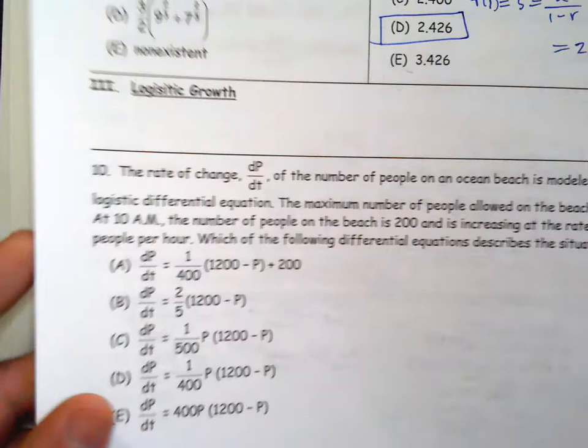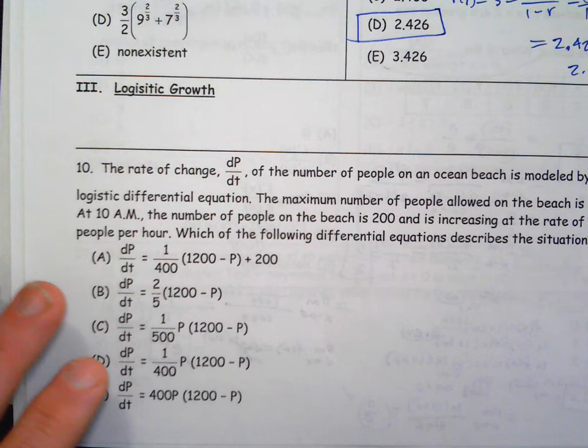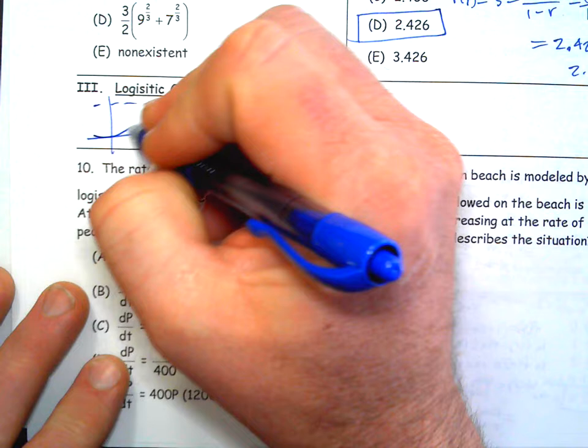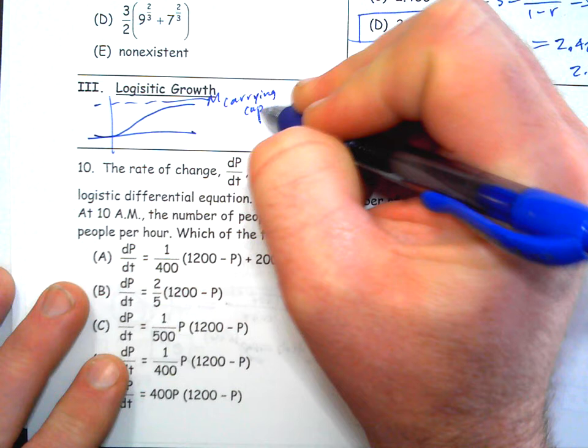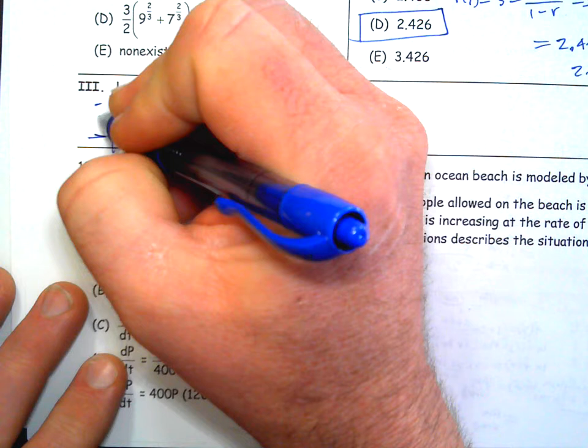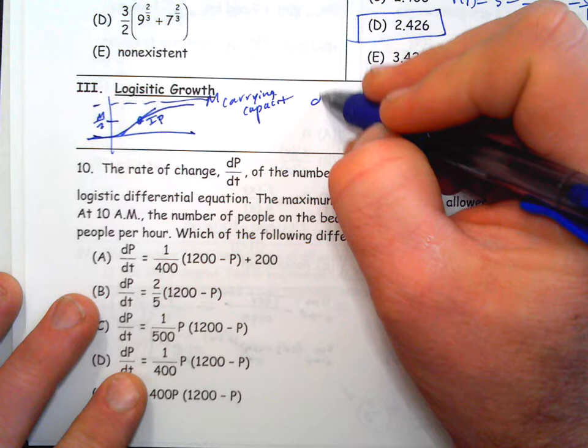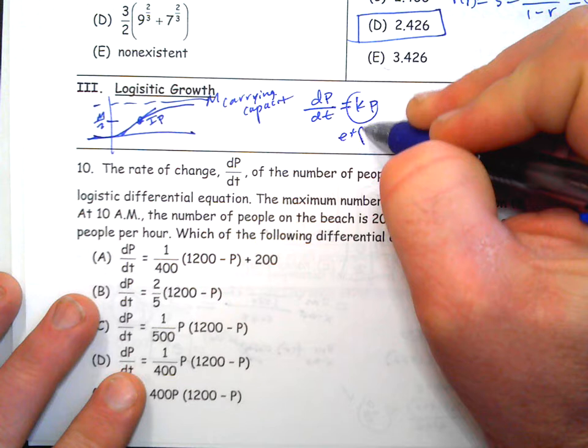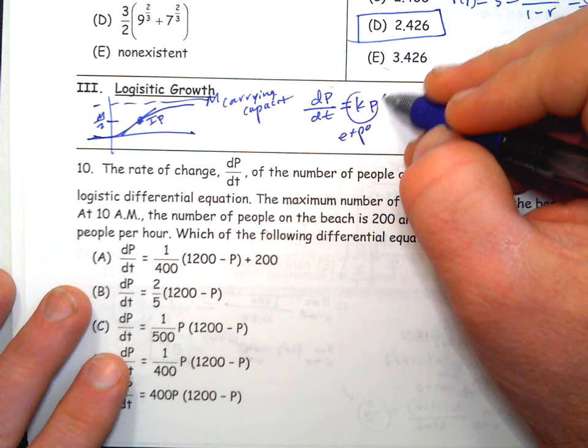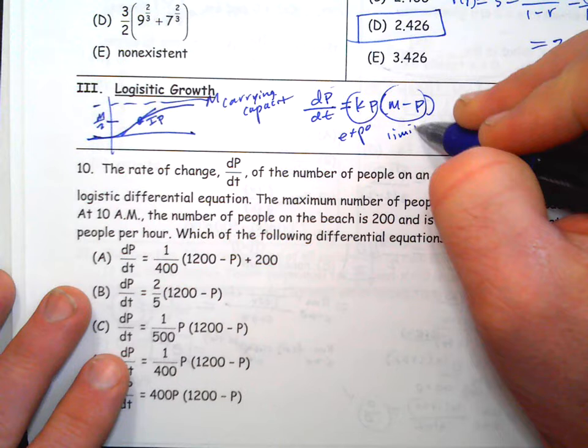Logistic growth is a more realistic growth model that goes toward the carrying capacity. Mostly you need to know that the max growth rate happens at the inflection point, which is always half the carrying capacity. The differential equation dP/dt equals K times P times (M minus P) — it has the exponential growth part, and then this limiting factor. As you get close to the carrying capacity, this will get closer and closer to zero, which makes the slope flatten out as we go to infinity.